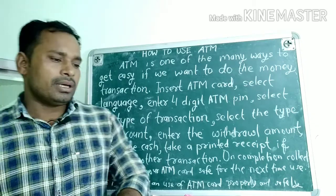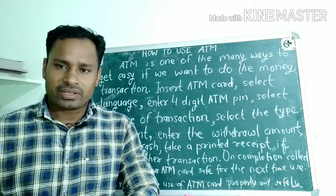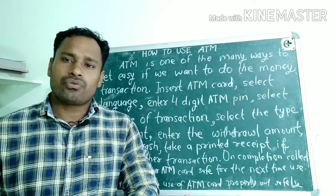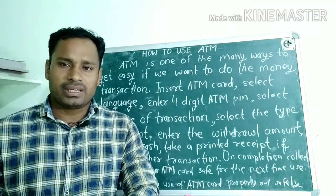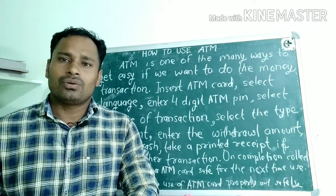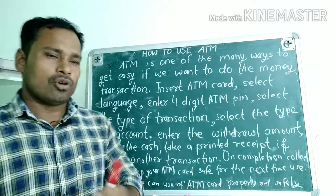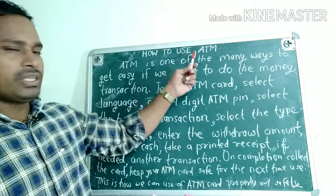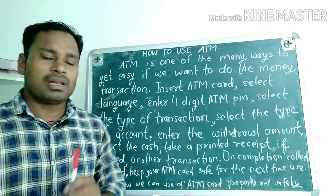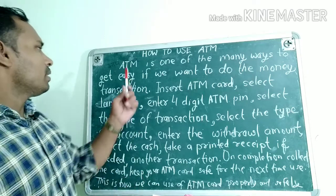Friends, this is a process — that is, a factual description. This is a part of Class 12 compulsory English. So we will understand this by doing it practically. The topic is: how to use an ATM — how an ATM can be used.